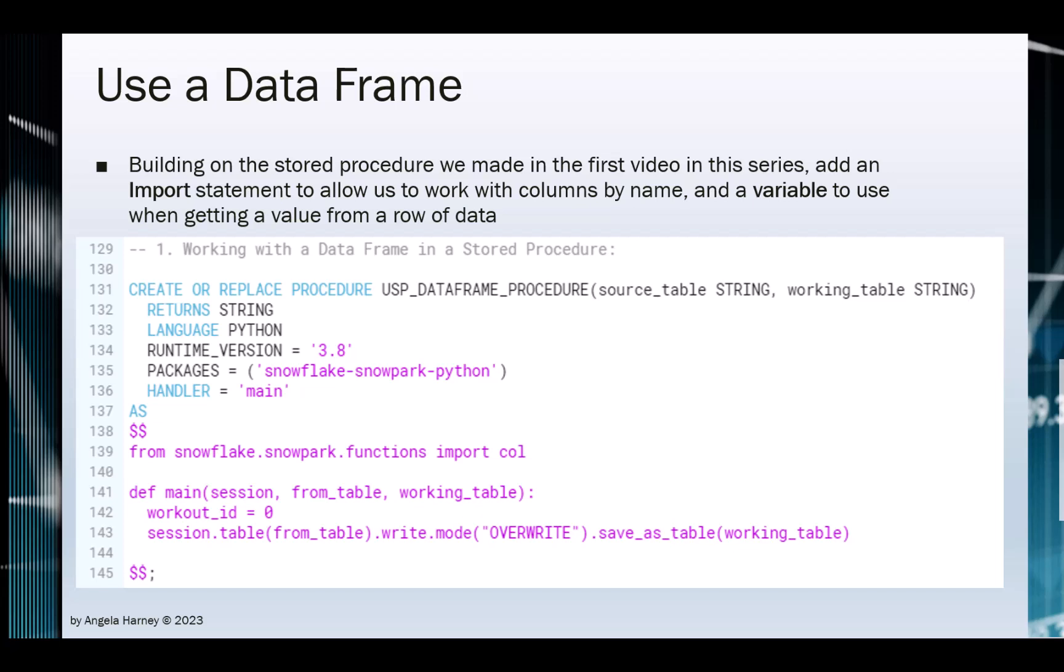Next, we will add a variable named table_count that gets set to the row count of the Snowflake table we create in the write.saveAs command. Next, we will add a variable named workoutId to store workout ids that we pass when we do a loop through our data frame rows in a coming slide.